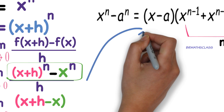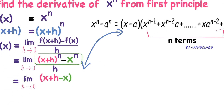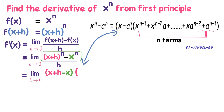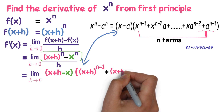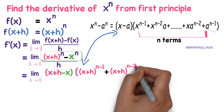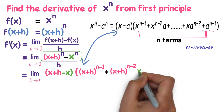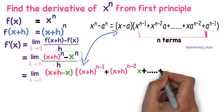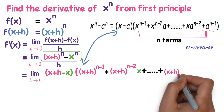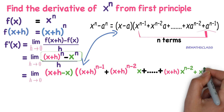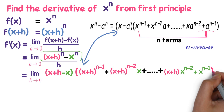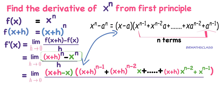Now x power n minus 1 — what is x? x plus h whole power n minus 1, plus x power n minus 2. What is x? x plus h whole power n minus 2, into what is a? a is x. Plus and so on, plus x plus h into a power n minus 2. What is a? x power n minus 2, plus a power n minus 1, which is x power n minus 1. You compare this with the formula — you can understand easily. Whole divided by h.